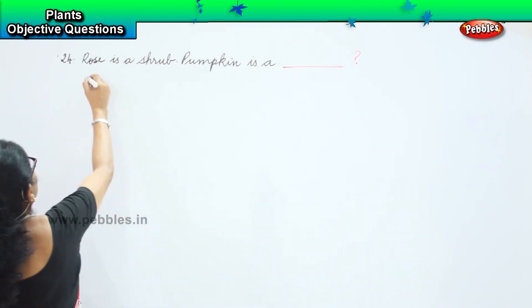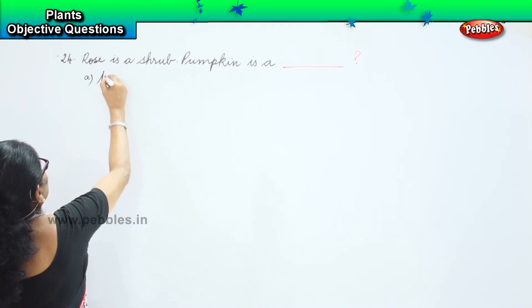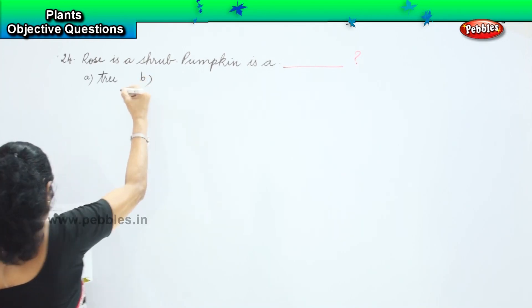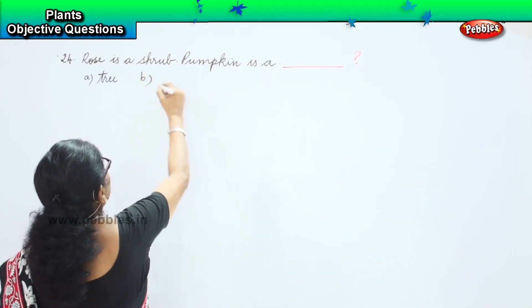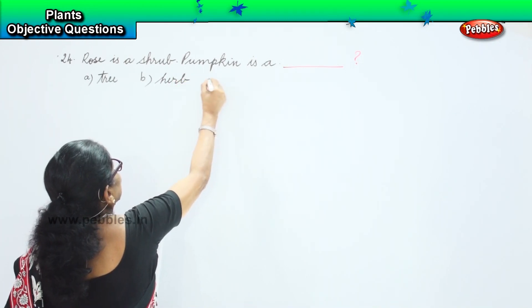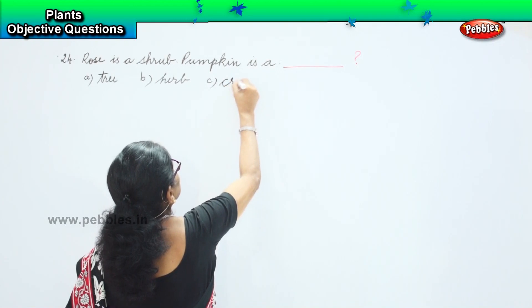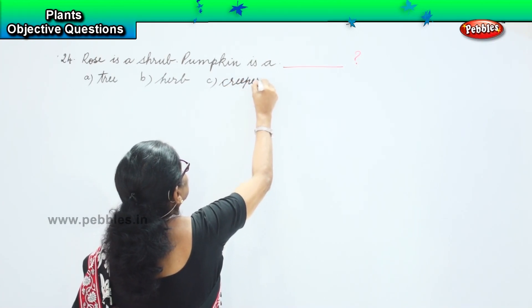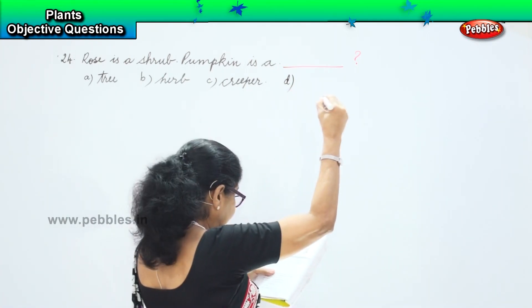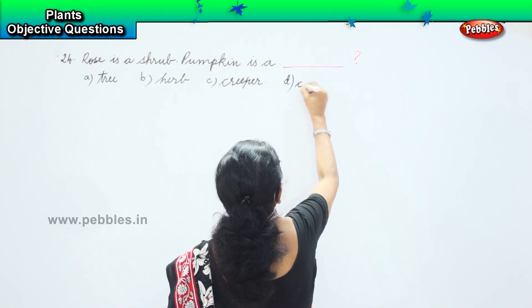The options are: A, it is a tree — pumpkin is a tree; B, it's a herb; option C, it's a creeper; and option D, it's a climber.